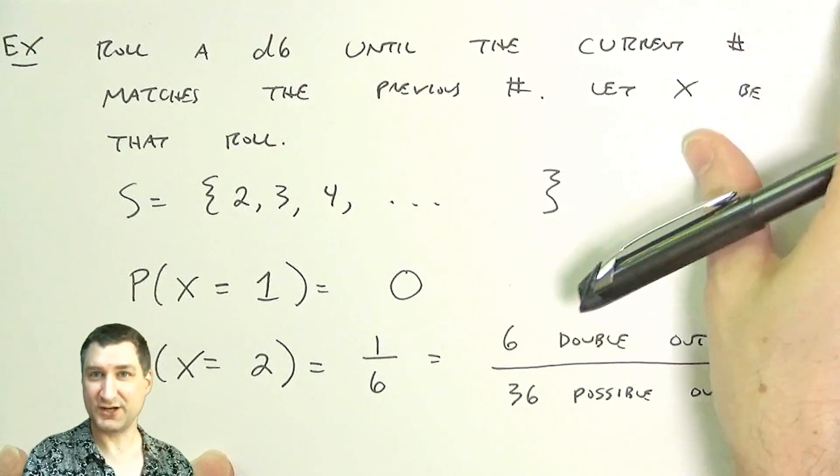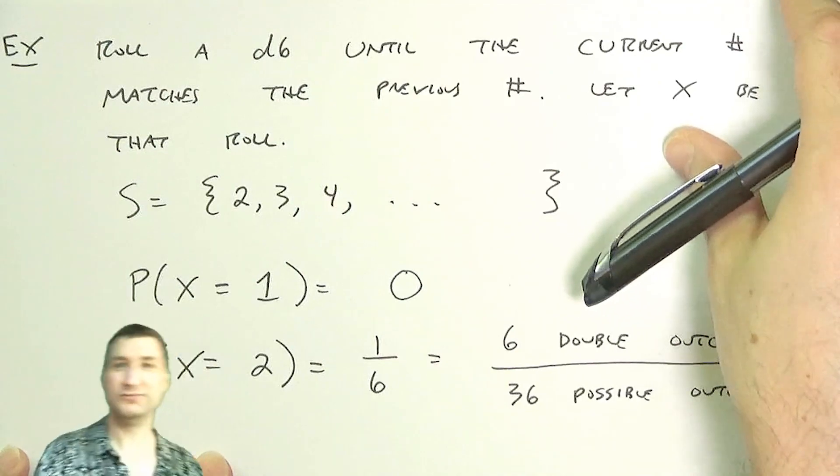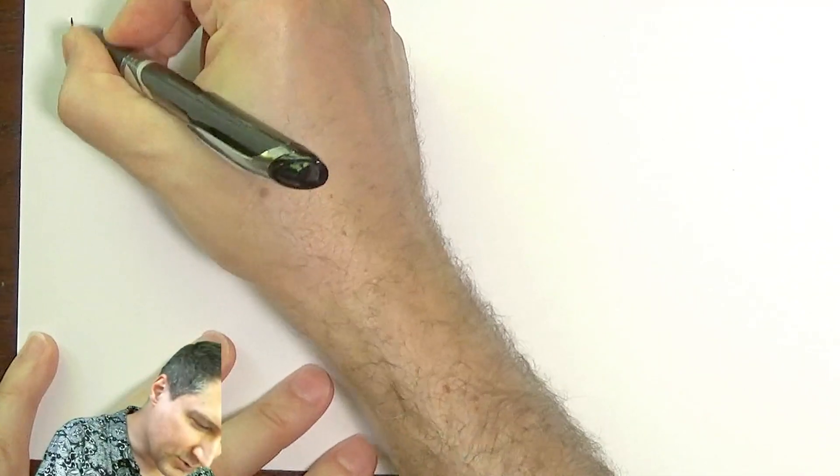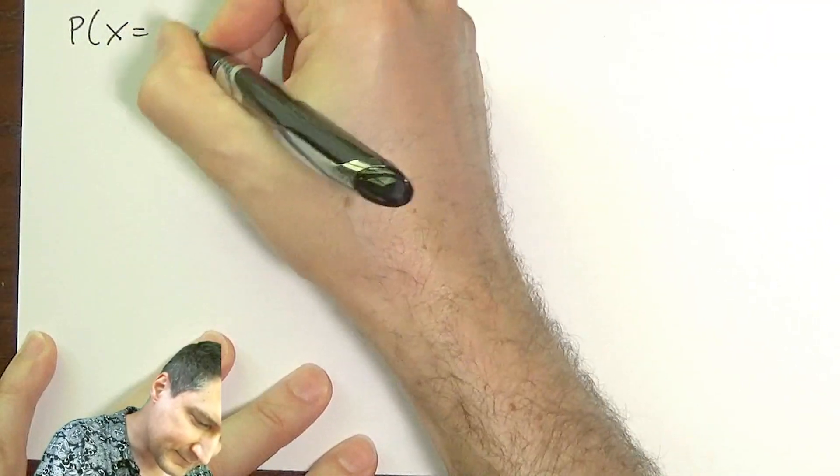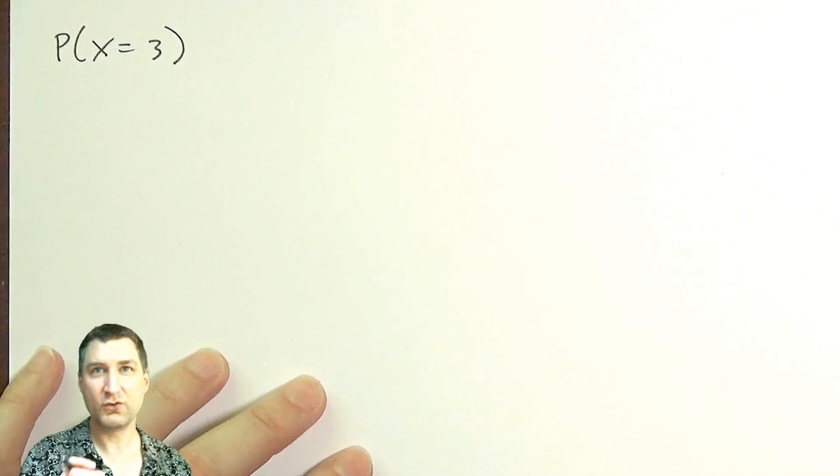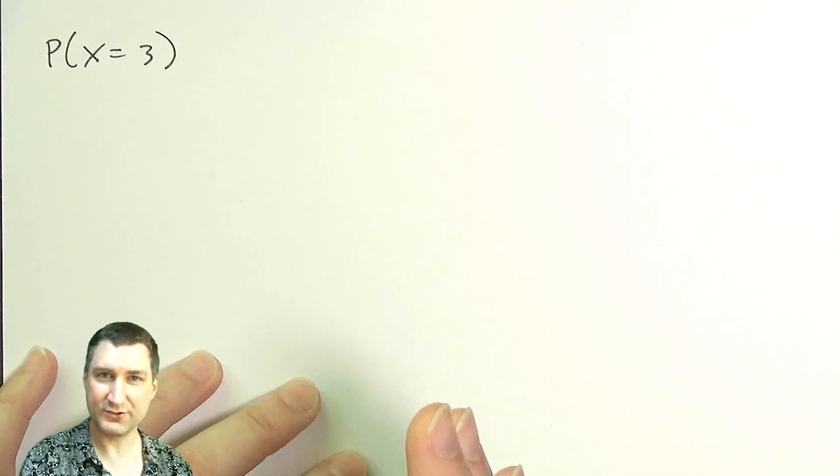The next one is a little bit trickier. What is the probability X equals 3? This is a little bit trickier. What we need is that roll 3 has to be the same as roll 2, but I can't have already had roll 2 be the same as roll 1.